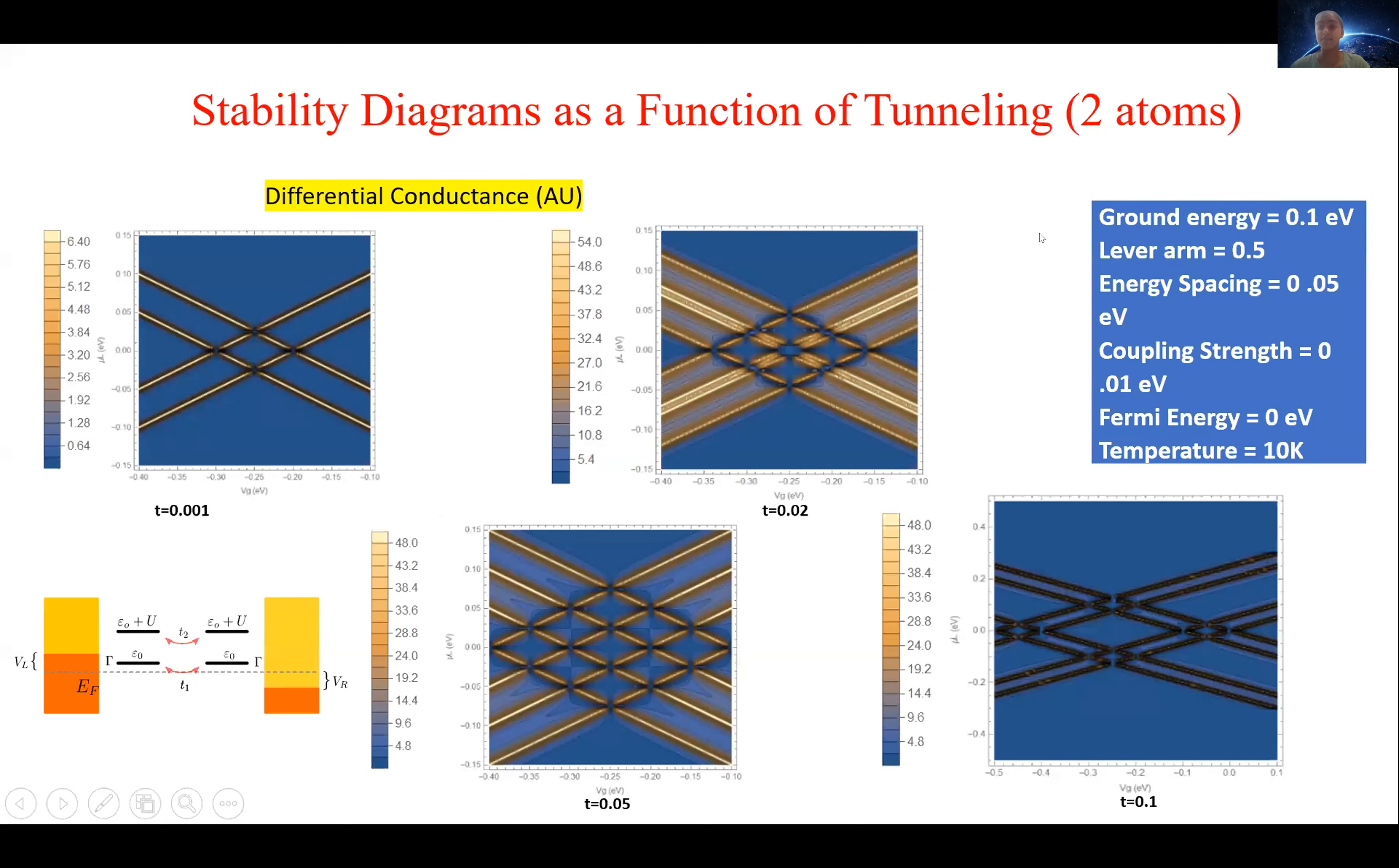When exploring the two atom system, we investigate many of the same parameters as in the one atom system, but the new parameter which we introduce is tunneling. And tunneling is effectively a coupling strength, but rather than that between the source drain electrodes and the central region, it's a coupling strength between the two atoms themselves, and more specifically between the atomic energy levels within the atoms.